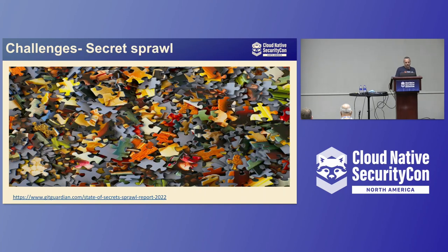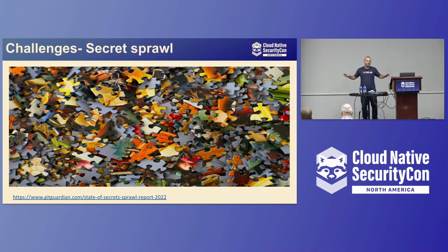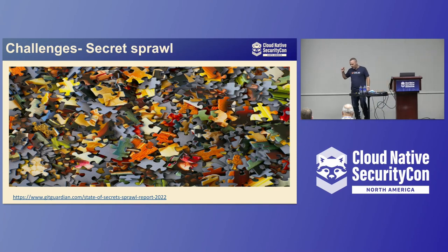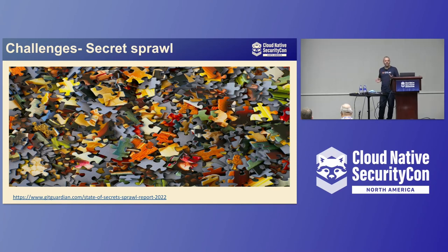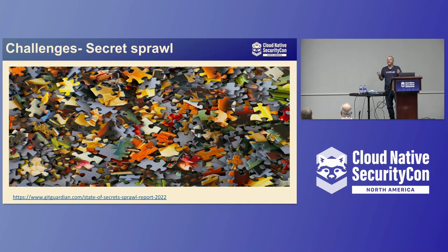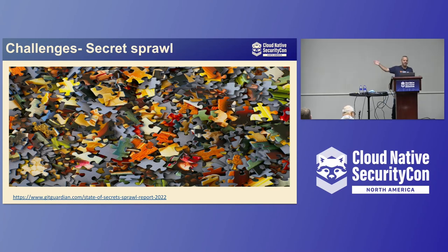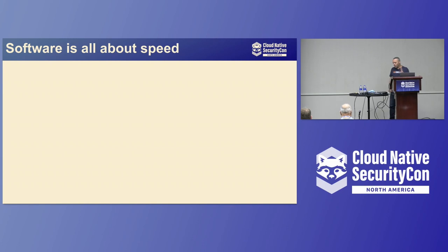Lastly, secrets sprawl occurs when an organization starts storing secrets in different places and reaches a point where they don't know where their secrets are. Two things happen with secrets sprawl: first, I read in a Gartner article that a DevOps engineer spends approximately 20 to 25 minutes just looking for a secret. But the bigger problem is that when we don't know where our secrets are, it's more likely for them to get leaked — and once leaked, the path to a vulnerability is short. There is also an early report called 'The State of Secrets Sprawl' covering this in detail.